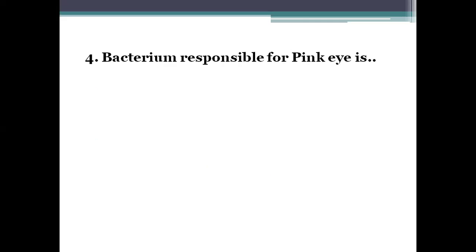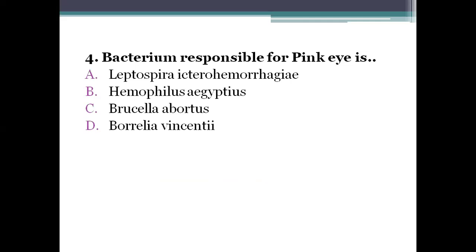Next question: the bacterium responsible for pink eye is? Option A, Leptospira icterohaemorrhagiae. Option B, Haemophilus aegypticus. Option C, Brucella abortus. Option D, Borrelia vincenti. The right answer is option B, Haemophilus aegypticus. It causes a highly contagious form of conjunctivitis — inflammation of the conjunctiva — which is popularly called pink eye. It also causes Brazilian purpuric fever (BPF).